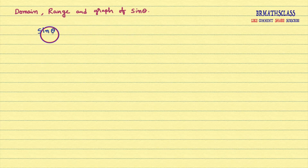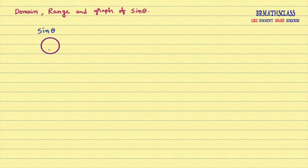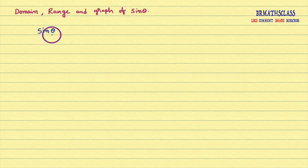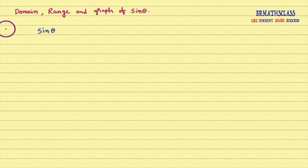You observe sine theta — here two things are there: one is theta, another one is sine theta. For example, if theta is 30 degrees, sine 30 degrees is 1 by 2. So here two things are there: one is theta values, another one is sine theta values. I will consider sine theta values as y. Let y equal to sine theta.